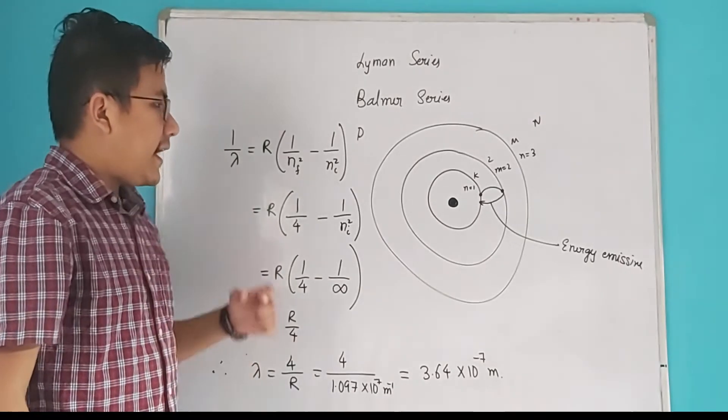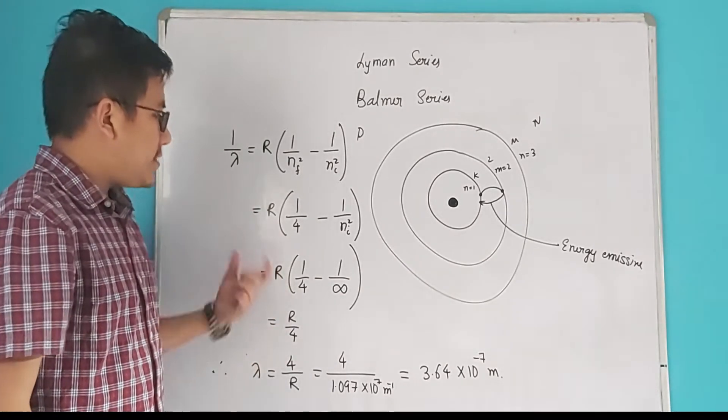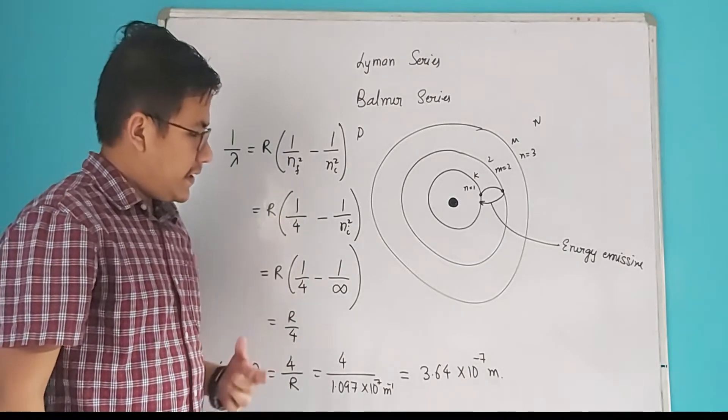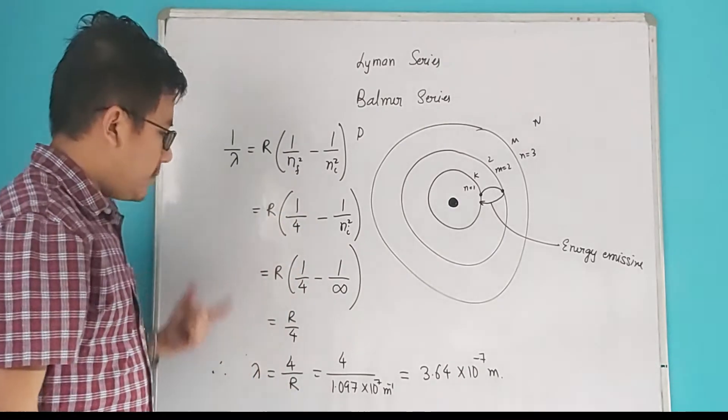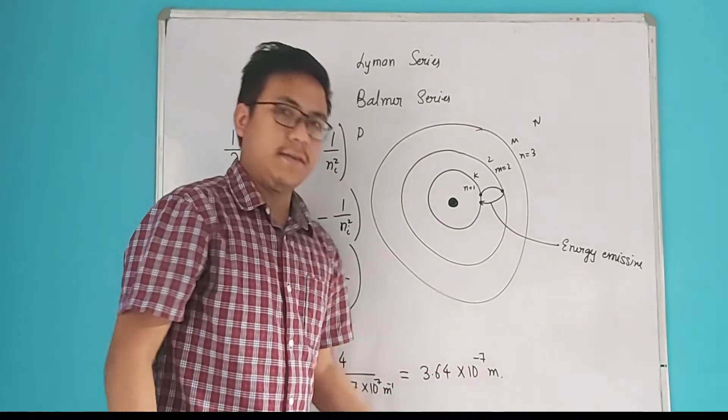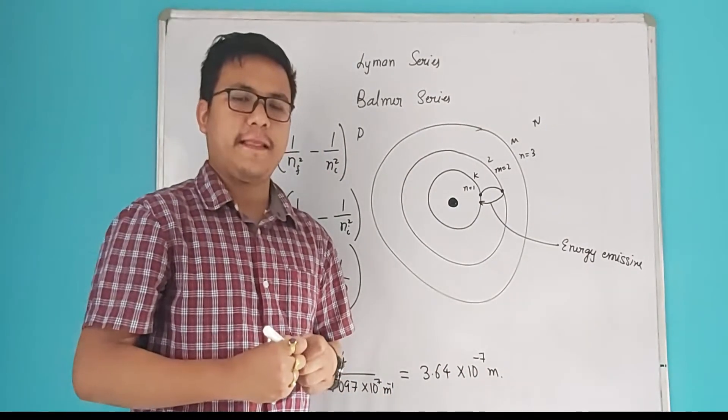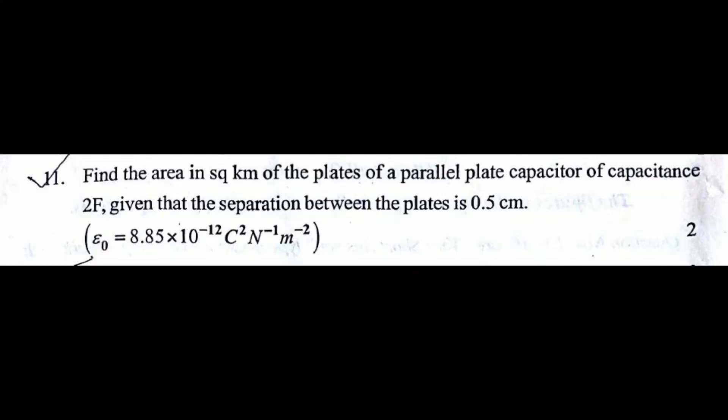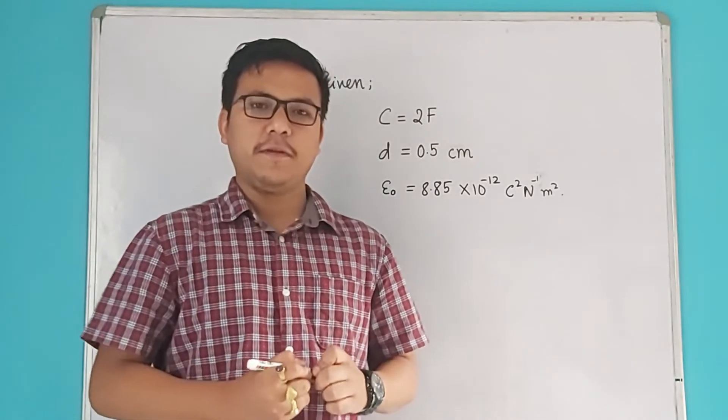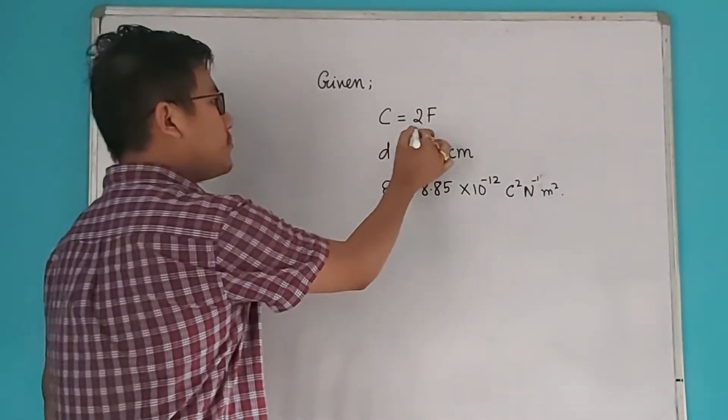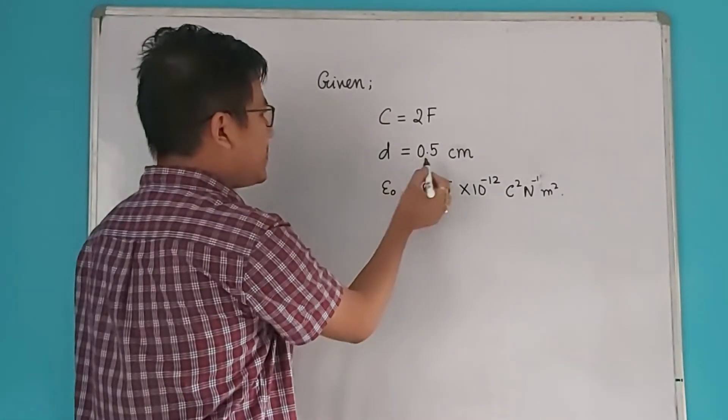So this is the shortest wavelength. Before calculation of this mathematical problem, atomic spectra transition idea is important for students. Let's go to the next question. Find the area in square kilometers of the plates of a parallel plate capacitor of capacitance 2F given that the separation between the plates is 0.5 cm.